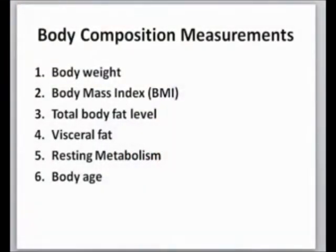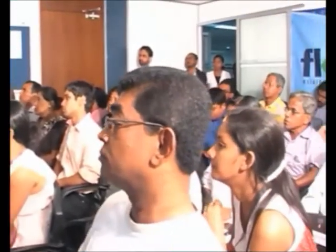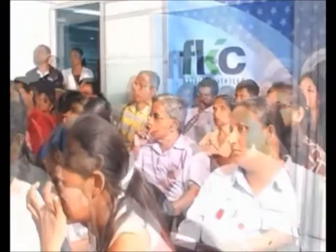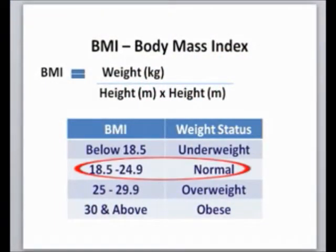When you stand on this machine and the current passes through your body, it detects the resistance developed by your body. To do that, we also provide the machine with parameters like height, weight, age, and gender. Knowing your BMI value gives you an idea of whether you are healthy. Below 18.5 is underweight; 18.5 to 25 is the normal range; going beyond that is overweight or obese, which is not good for your body.